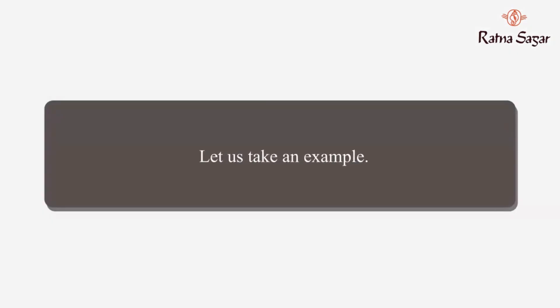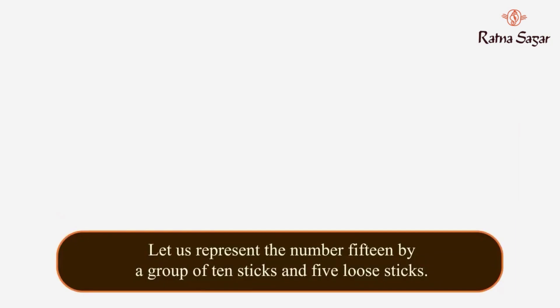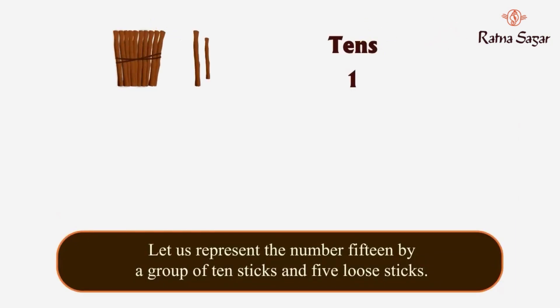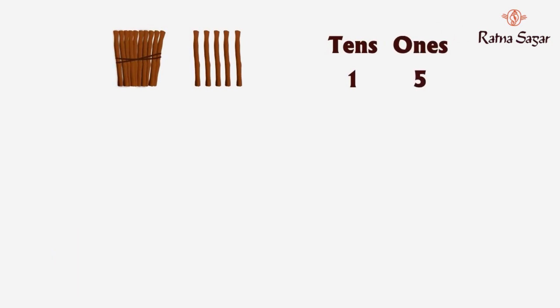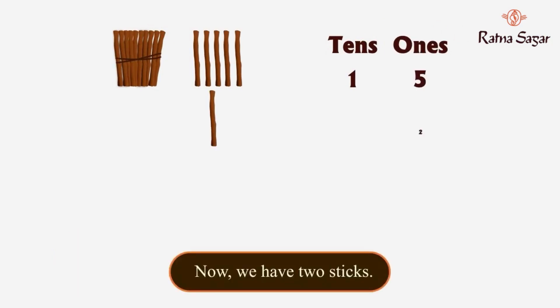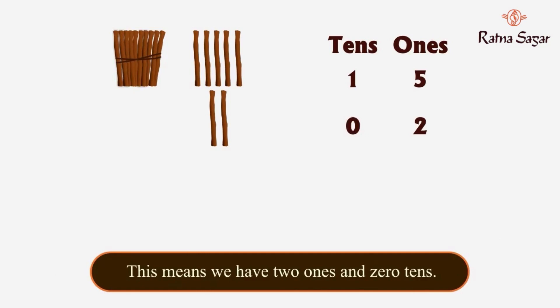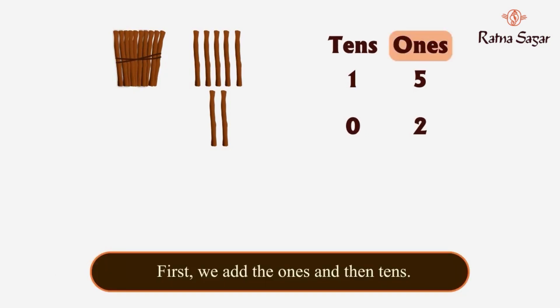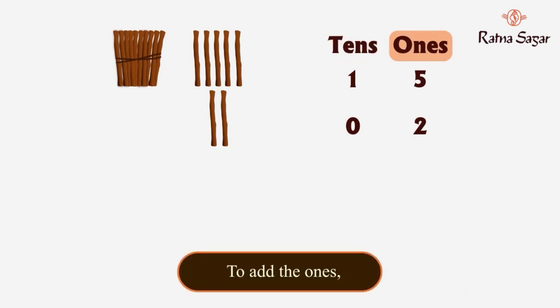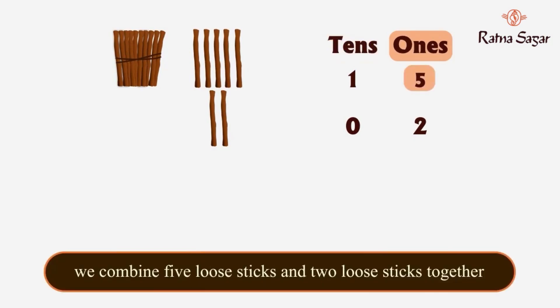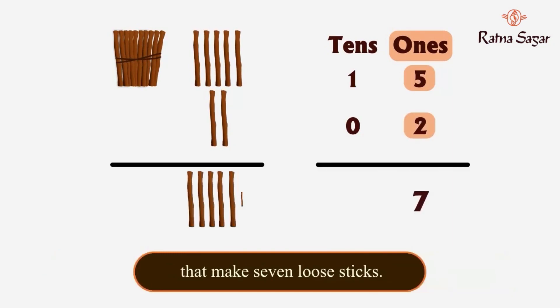Let us take an example. What is 15 plus 2? Let us represent the number 15 by a group of 10 sticks and five loose sticks. Now we have two sticks, which means we have two ones and zero tens. First we add the ones, then the tens. To add the ones, we combine five blue sticks and two loose sticks together — that makes seven blue sticks.